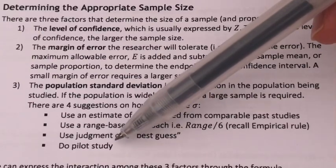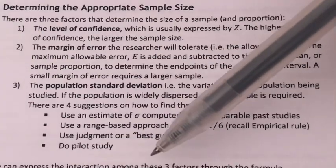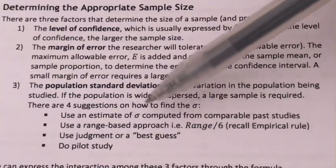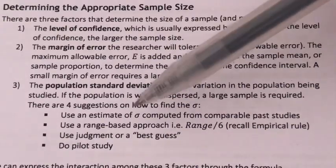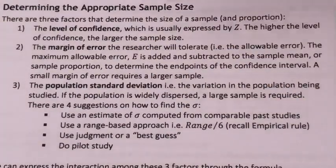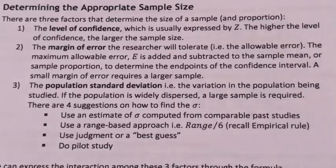And finally, the most popular method is to do a pilot study. A pilot study is basically conducting our study on a much smaller scale first, before rolling out the study to its full nationwide level. Now, having learned the three factors to determine the appropriate sample size, we can actually see the interaction among them by way of the error formula.